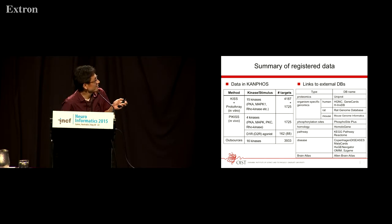This is the summary of the registered data in our database. Currently, we have about 7,000 phosphorylation sites detected by in vitro assay. And also, we have about 2,000 phosphorylation sites detected by in vivo assay.